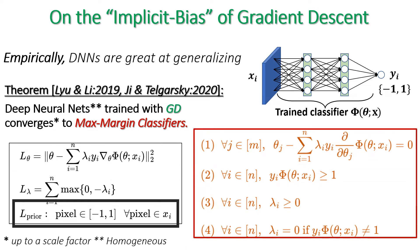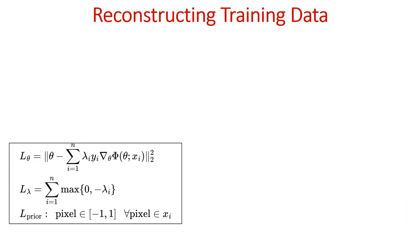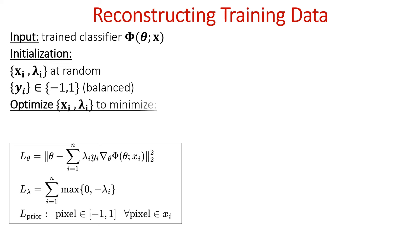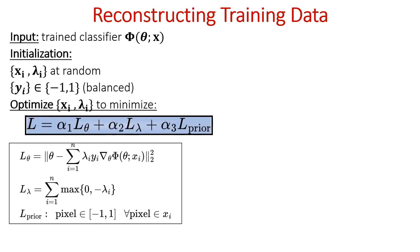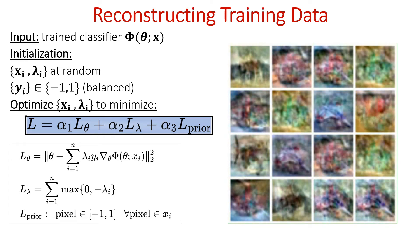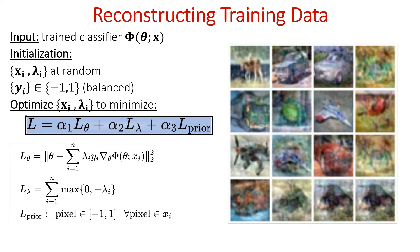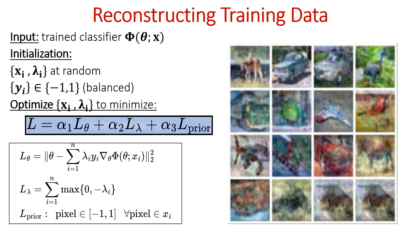L_prior is optional, where we require each pixel in the reconstructed images to be between minus 1 and 1. To sum up our reconstruction scheme: given a trained binary classifier phi with fixed parameters theta, we initialize X_i and lambda at random and assign Y_i in a balanced manner, then minimize the total loss. This is how the optimization looks when a classifier is trained on image samples from the CIFAR-10 dataset — different initializations slowly drift into training samples by minimizing our proposed loss.